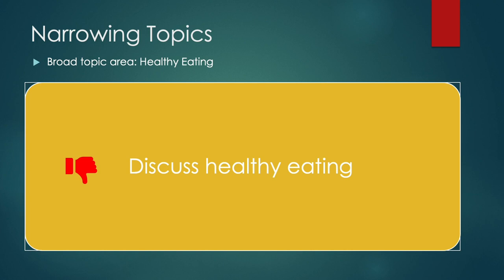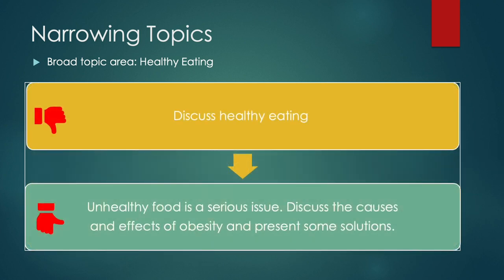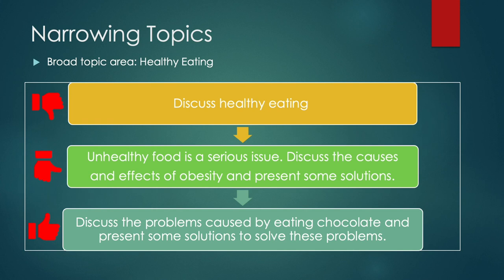We recommend that you talk about the problem in the question. So for example you could have: 'Unhealthy food is a serious issue — discuss the causes and effects of obesity and present some solutions.' This is better than the first question, but it could still be further narrowed. Unhealthy food by itself is a very big issue with many causes and many effects, so we could think about what type of unhealthy food will be discussed — for example fast food, soft drinks and so on.